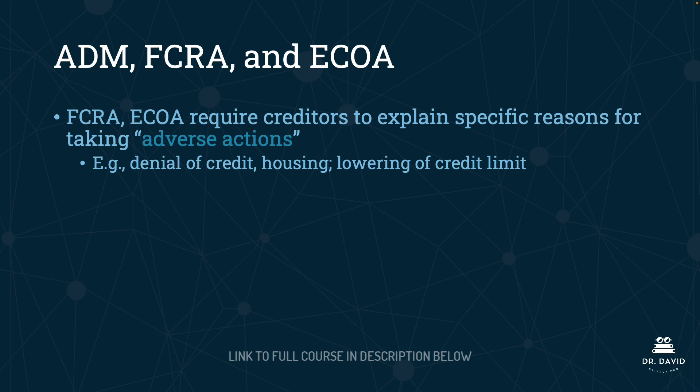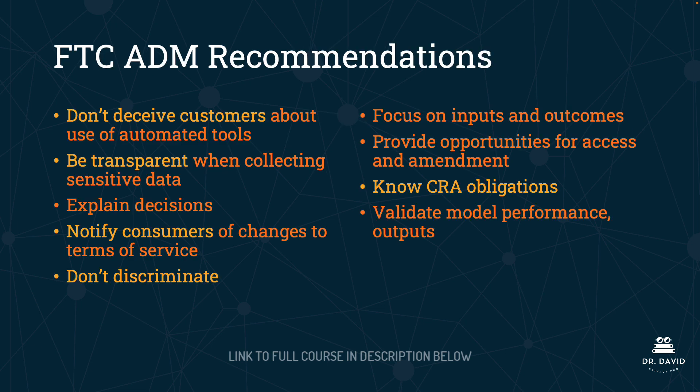An example of an adverse action in this context — concerning the FCRA and the ECOA — would be denial of credit, denial of housing, or lowering of an individual's credit limit.